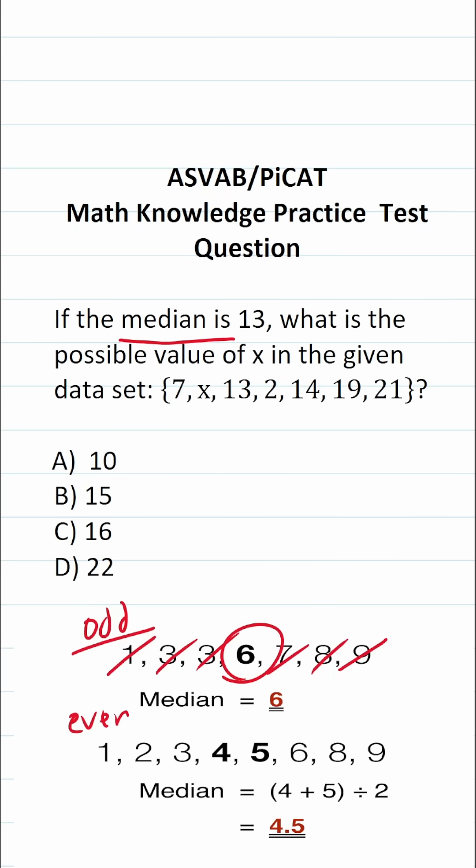If you have an even number of values in your data set, you're going to arrange the numbers from least to greatest. You're going to start crossing them off. But as you do that, you're going to notice that you're going to have two numbers in the middle.